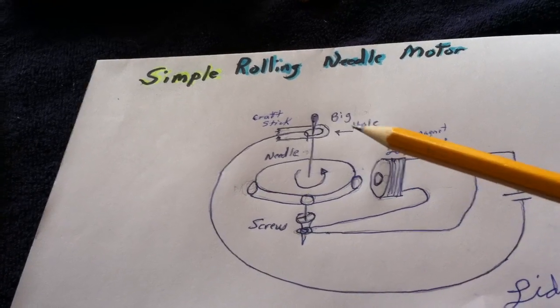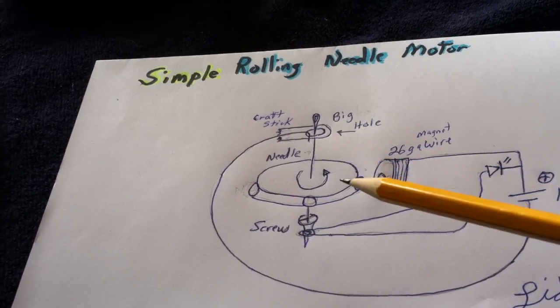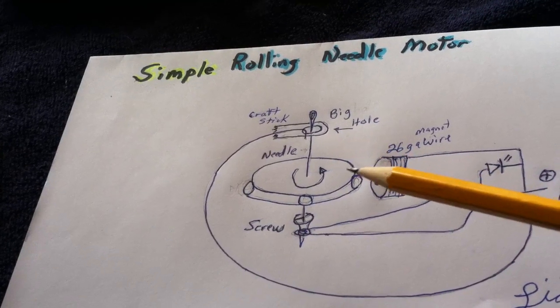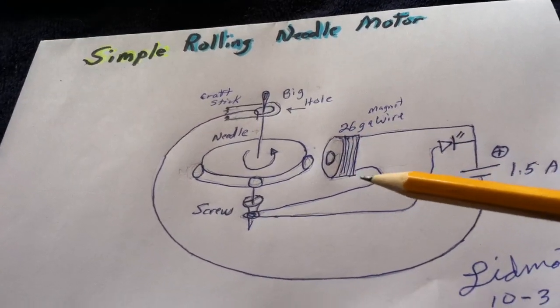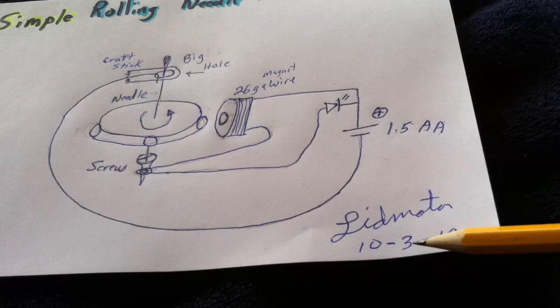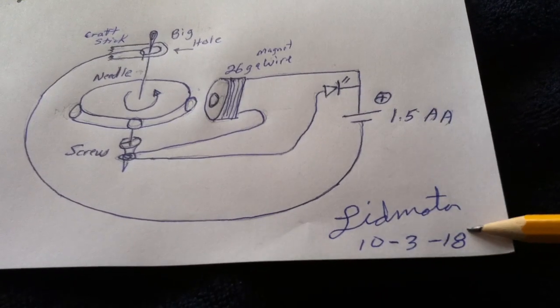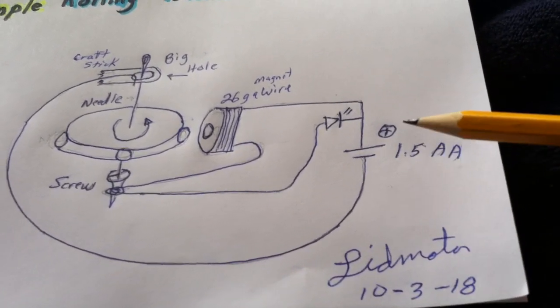The thing stops as it rolls around until the next time, and then it hits it again. If you get everything just right, it runs. Today is the 3rd of October 2018. It's just a volt and a half on a really simple circuit.